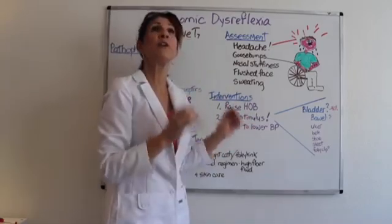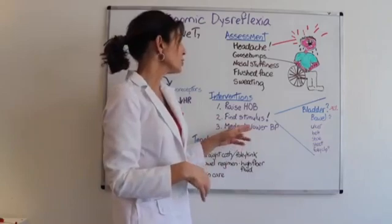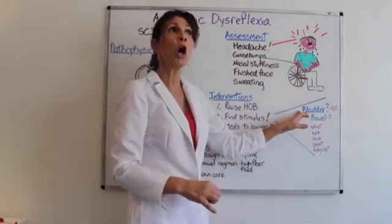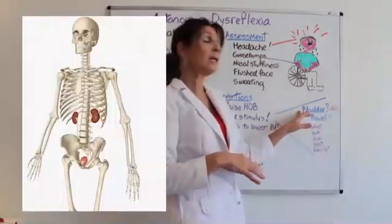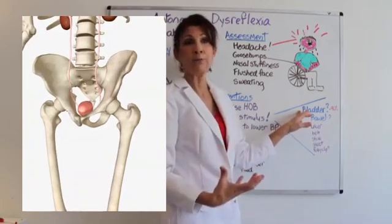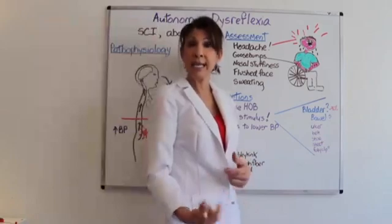The next thing you do is find the pain stimulus. That's the only thing that's going to reverse this. The most common problem or cause of autonomic dysreflexia, I've read like 9 out of 10 cases, it's due to a distended bladder. Either the patient can't empty it or their foley is kinked.